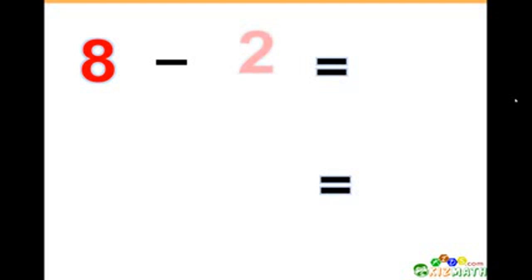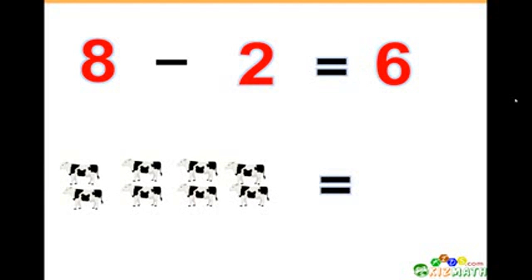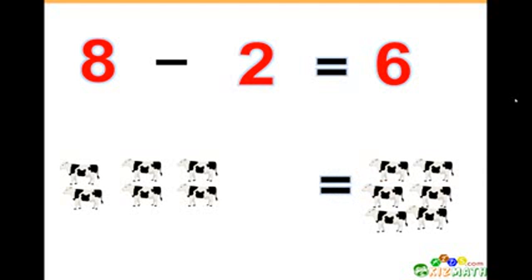Eight minus two equals six. If we have eight cows and we take away two cows, there are only six cows left.